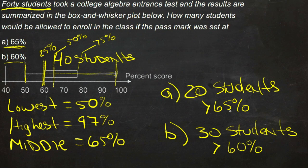So 20 students would get into the class if they set the minimum score at 65%, and 30 students would get in if they set the minimum score at 60%.